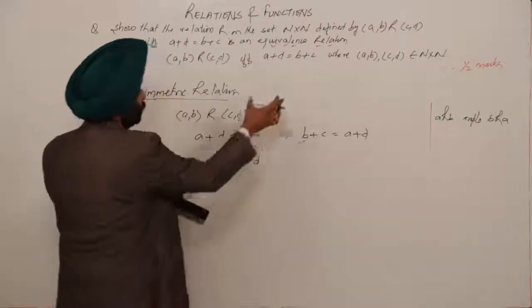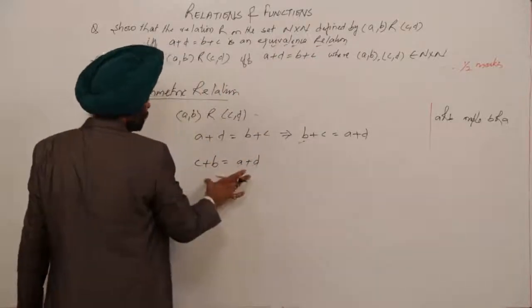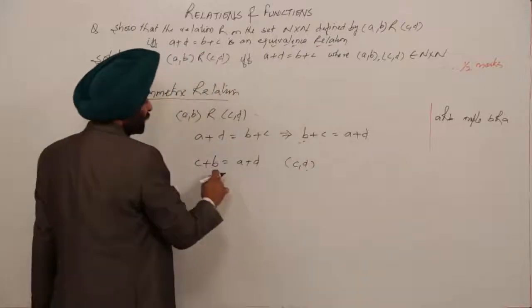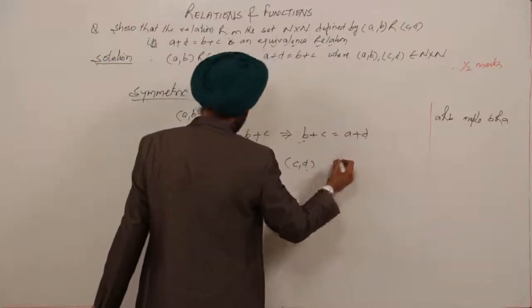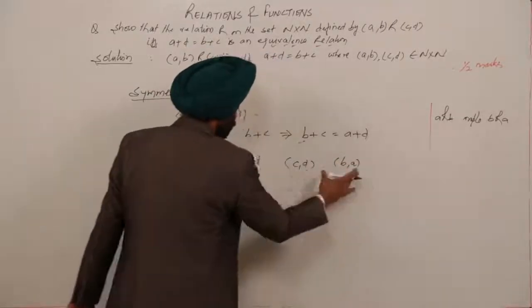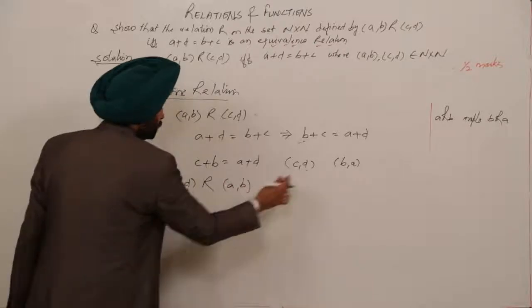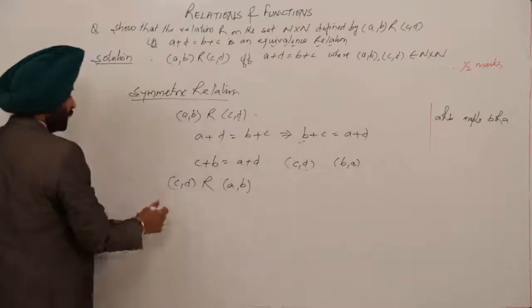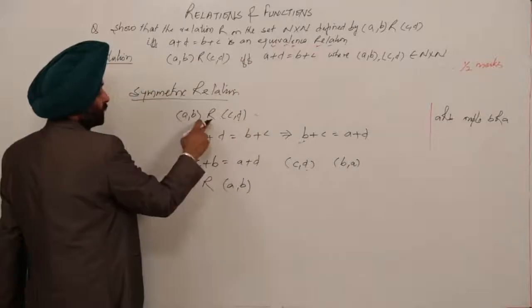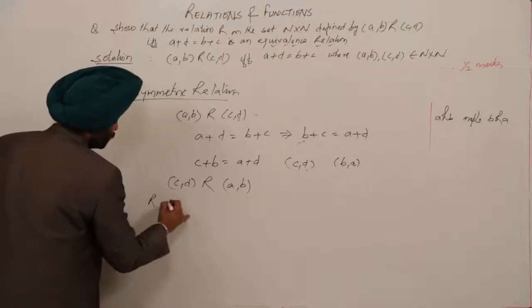Moving from this condition: the result is first and fourth give c,d, and second and third give b,a. So from this we get (c,d) R (a,b). We have proved: (a,b) R (c,d) implies (c,d) R (a,b). Therefore our relation is symmetric.